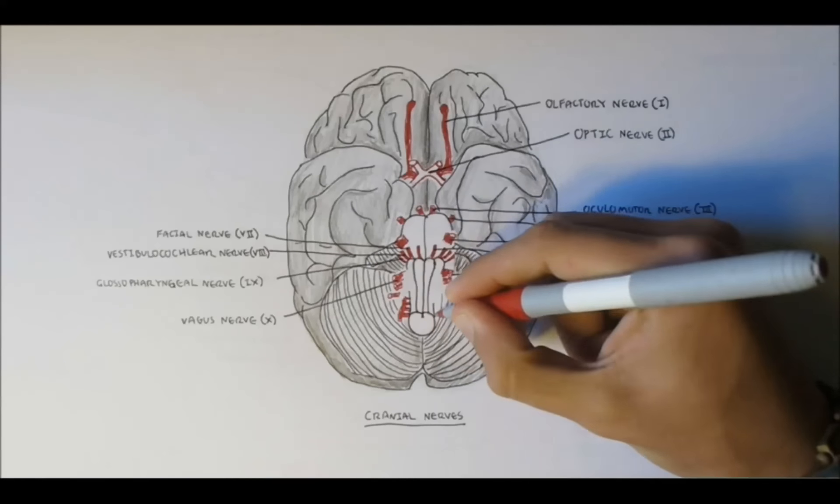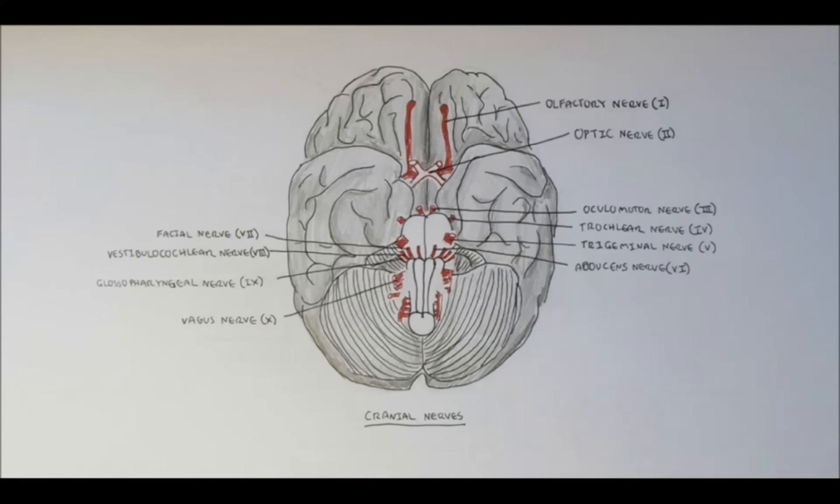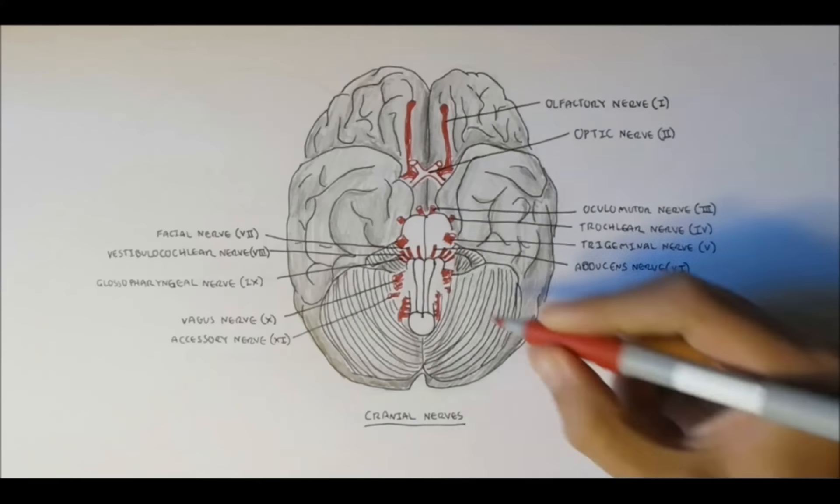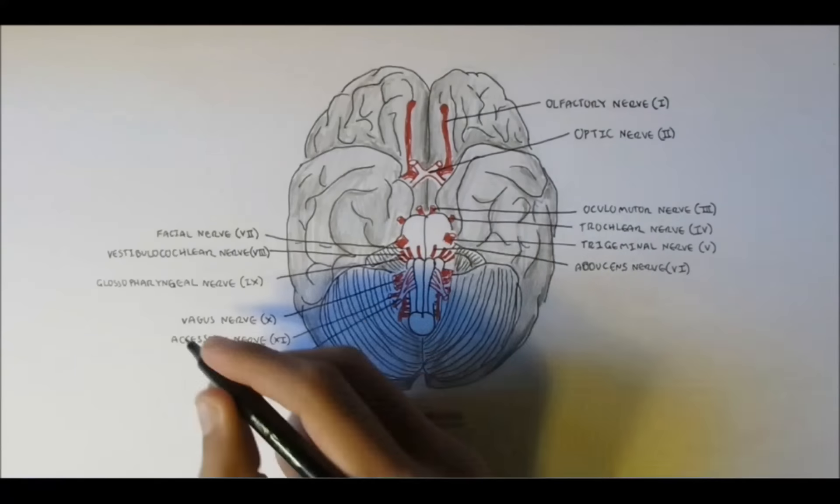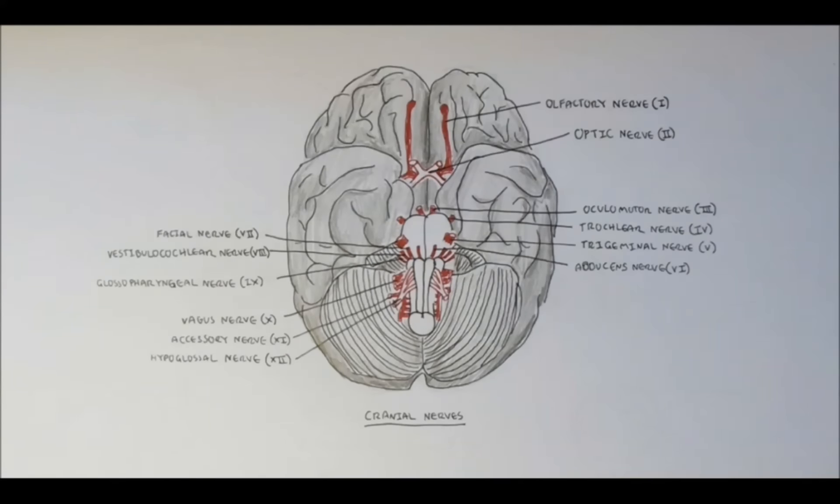Nerve 11, the accessory nerve, just above where the spinal cord begins, is the accessory nerve. And finally, nerve 12 is actually situated just under the glossopharyngeal nerve, and it's called the hypoglossal nerve, nerve 12.